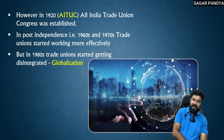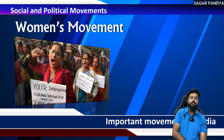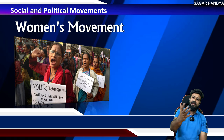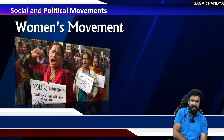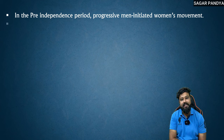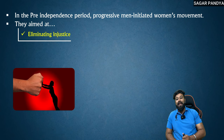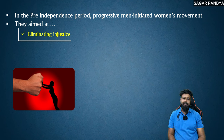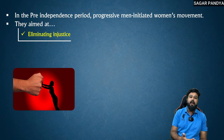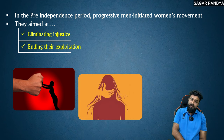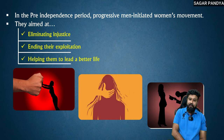Next, we are going to study women's movements. The women's movement started obviously for the rights of females — we studied a full chapter on this in 9th standard. In the pre-independence period, progressive men initiated women's movements. They aimed at eliminating injustice, ending exploitation of women, and helping them lead a better life. This was becoming necessary.